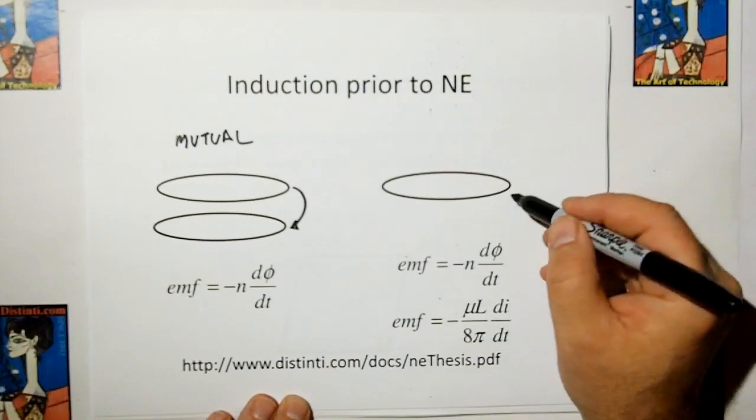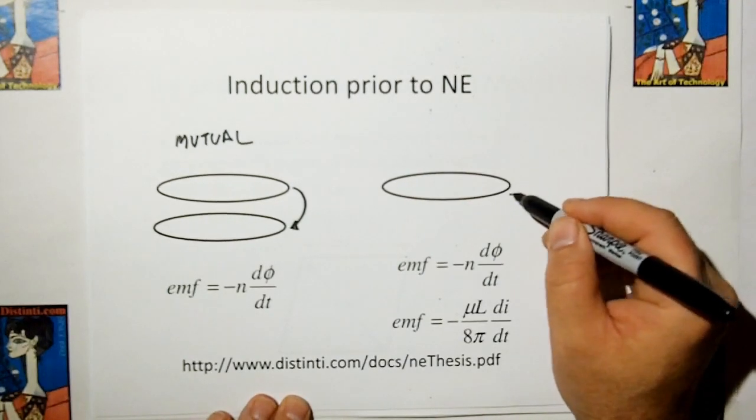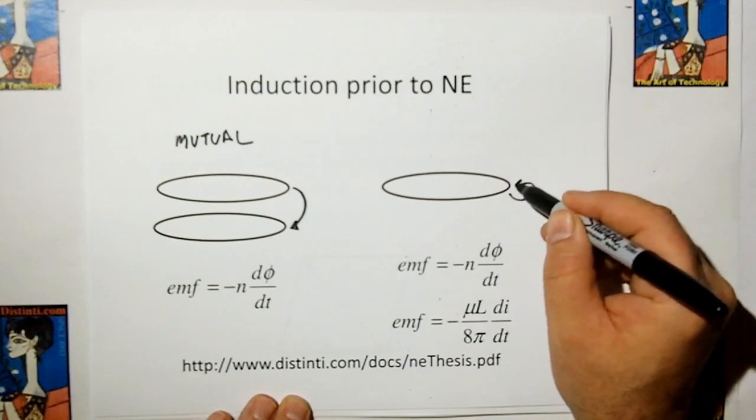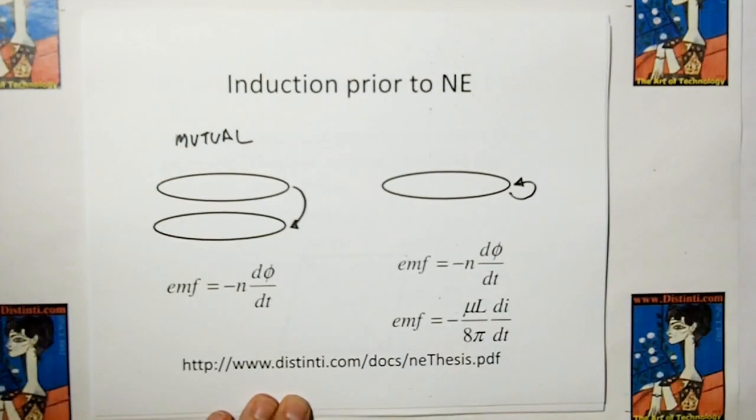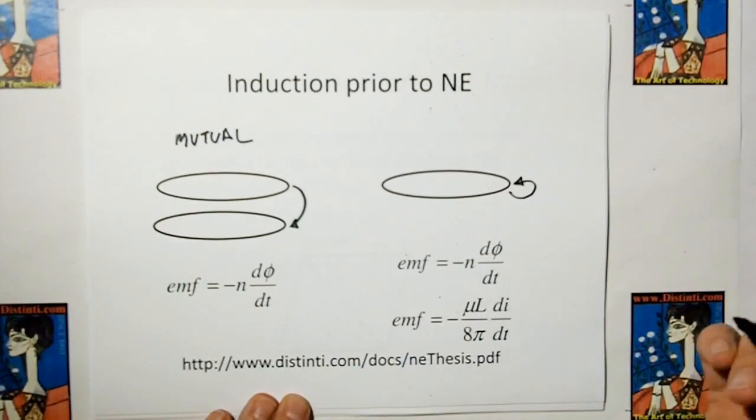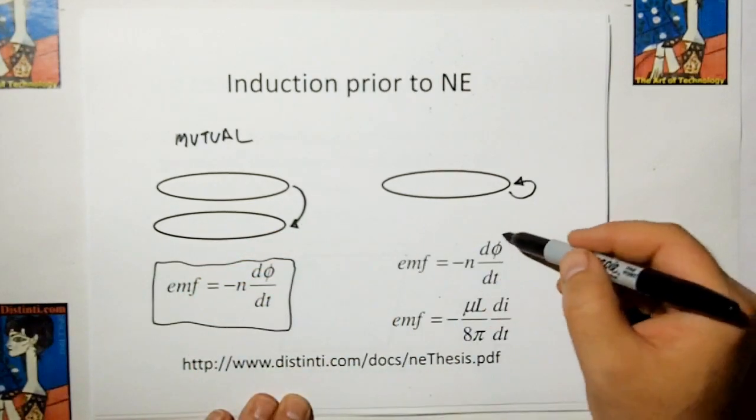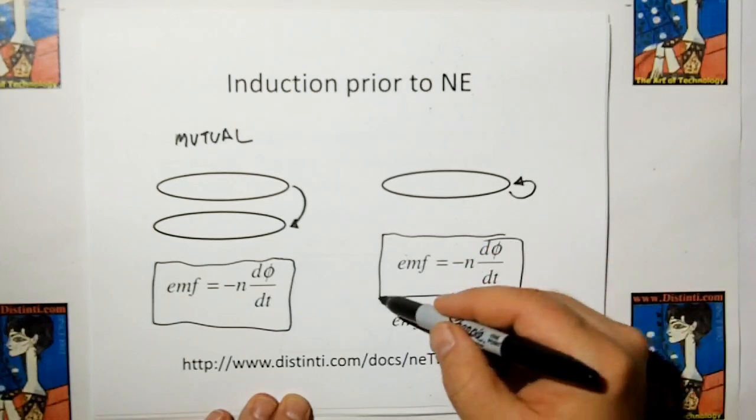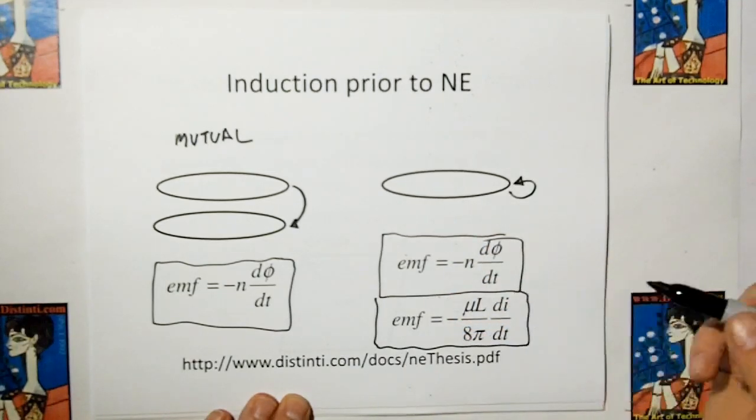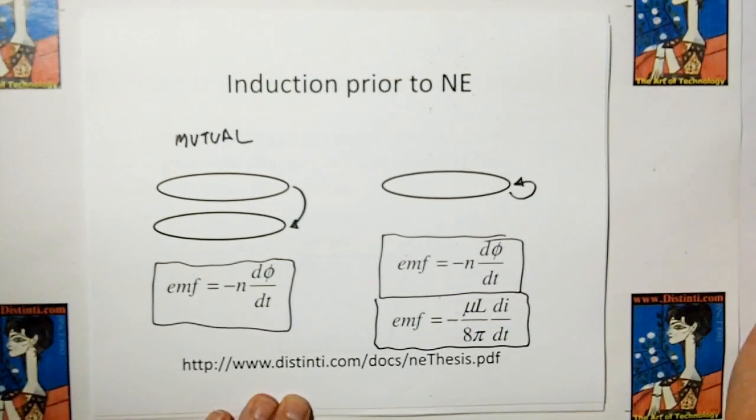The problem is when you want to calculate the self-inductance of a loop, that's when the magnetic field links back to the same loop. We find out from classical theory that it's not only Faraday's law, but you have to add in this extra term here, this intrinsic, or some people call it internal inductance model.